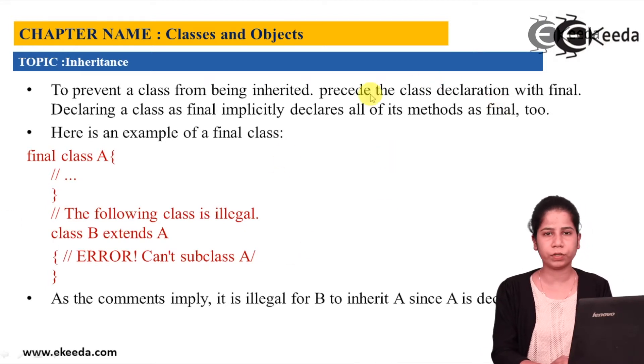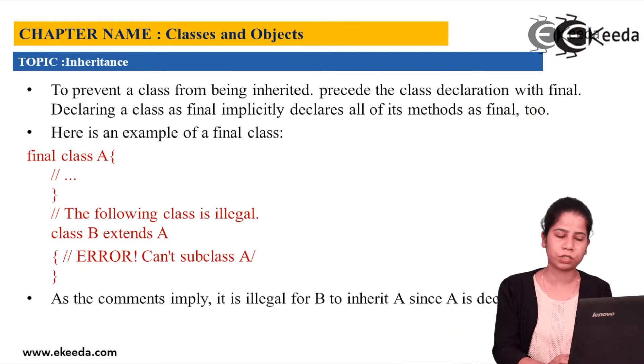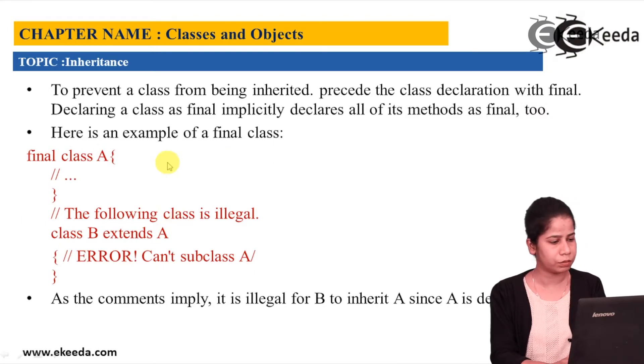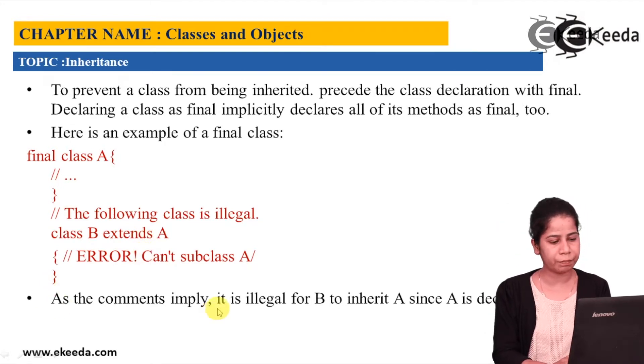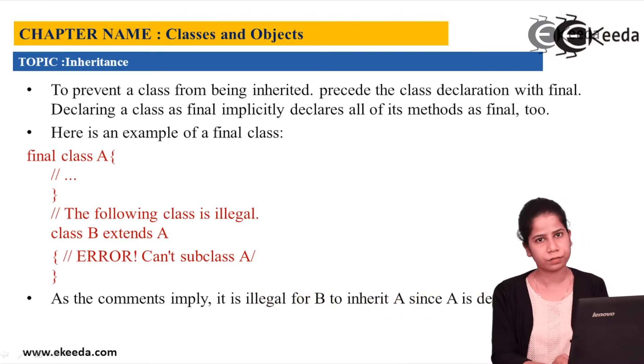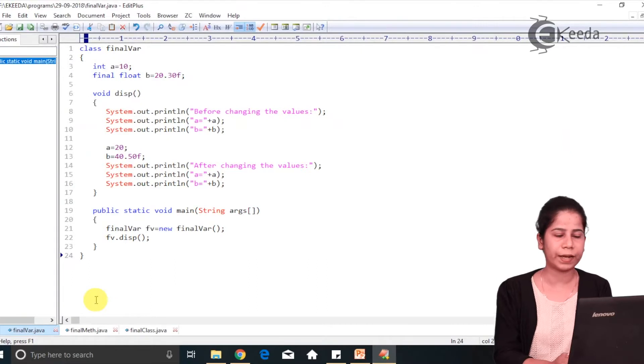So to prevent class from being inherited, precede the class declaration with final. Declaring a class as final implicitly declares all its methods, all the methods become final too. So if we are making class as final, then all the methods will become final. So here is an example, final class A, the class is final over here. Class B extends A, this statement itself will give me error. As the comment implies, it is illegal for B to inherit A since A is declared as final.